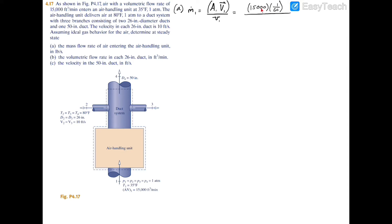This expression yields units of cubic feet per second. To find the specific volume for the mass flow rate, we use the ideal gas law. As stated in the problem, we have ideal gas behavior for the air, so we use p1·v1 = R·T1. This is the pV = mRT expression divided through by m, so volume becomes specific volume on a per unit mass basis. Rearranging: v1 = R·T1 / p1.